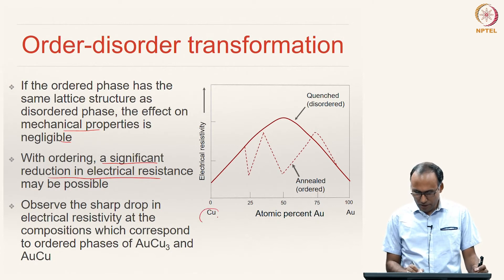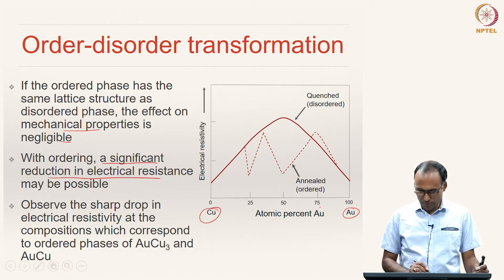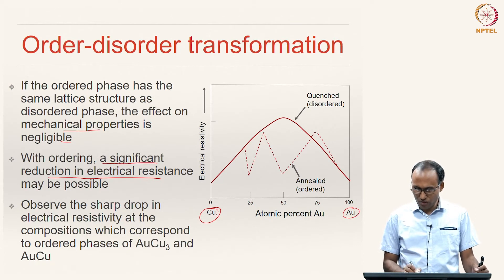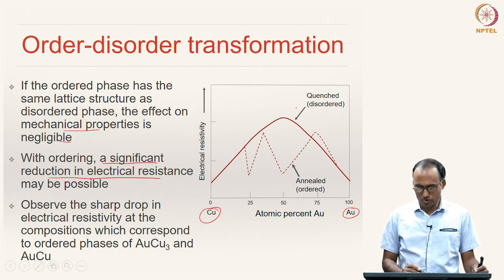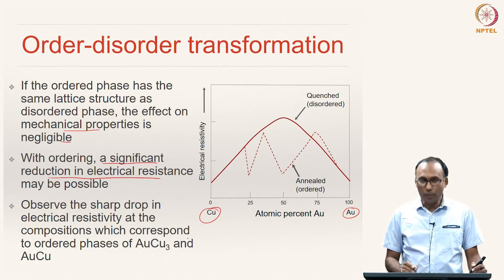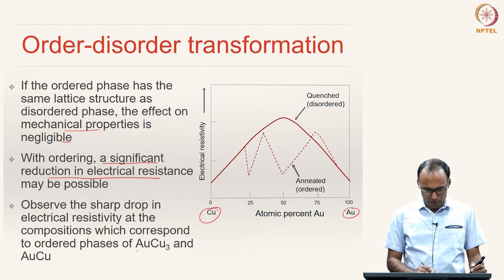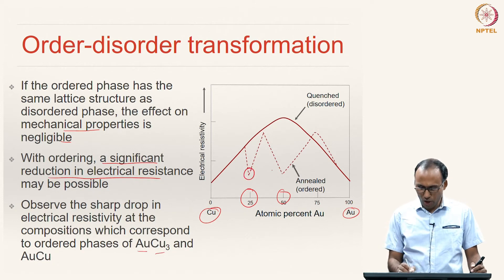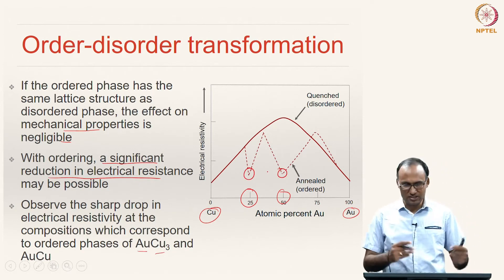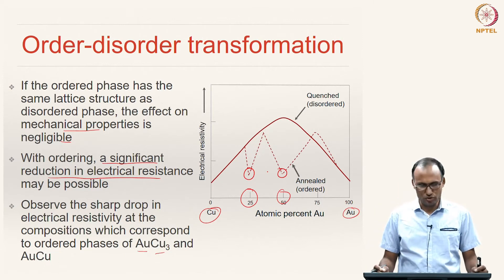For instance, in the copper-gold system, the solid line represents electrical resistivity as a function of alloy composition for the disordered solid solution. For the ordered solid solution, at compositions AuCu₃ and AuCu, you can see a sharp drop in electrical resistivity — meaning conductivity has increased significantly for the ordered solid solution.